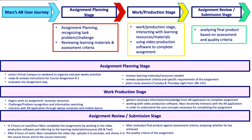The final phase of this first evaluation process has been developing a user journey map, a technique which aims to describe the interaction between an individual and the rest of the educational scenario. It has been broken into three distinct stages of learner activity: the assignment planning stage, where the learner first interacts with the resource; the work production stage, where the learner relies on the AR resource to complete the specific learning task; and the assignment review and submission stage.